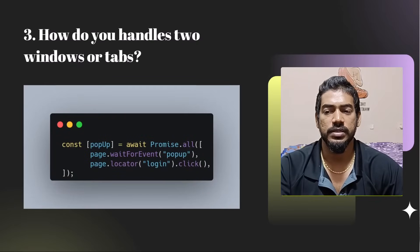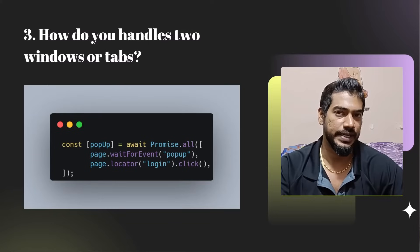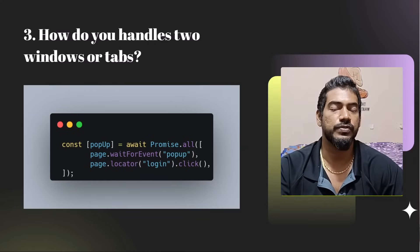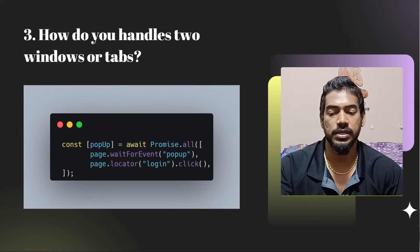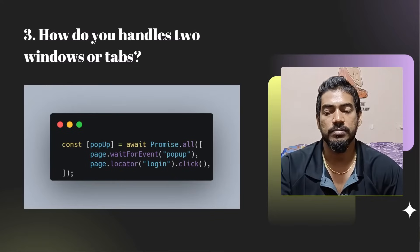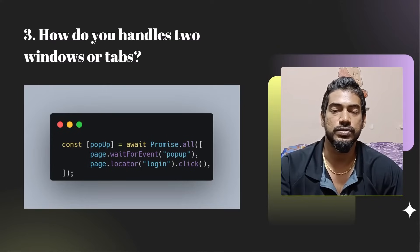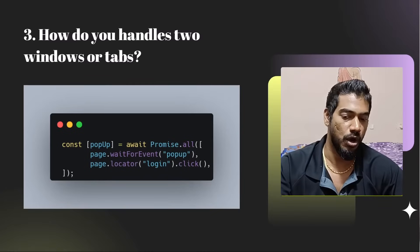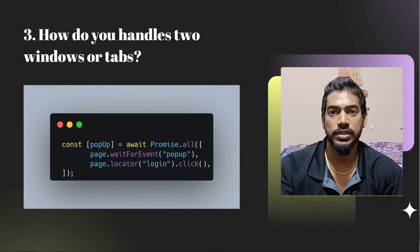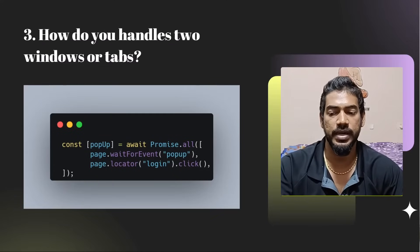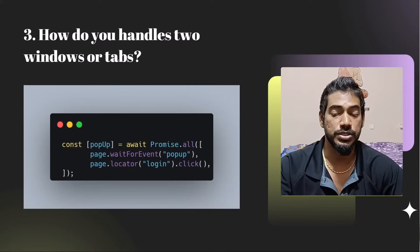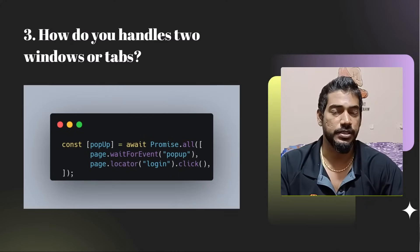How to handle new windows and tabs? We have to wait for the event called 'popup' and then click on the element. In Selenium, after the click action you get the window handles and switch to the window, but in Playwright it works as an event listener concept. We wait for the event and then perform the click action. This works in a race condition within Promise.all — after completion of all functions within Promise.all, it returns the popup. The square bracket syntax is the destructuring concept in JavaScript or TypeScript.